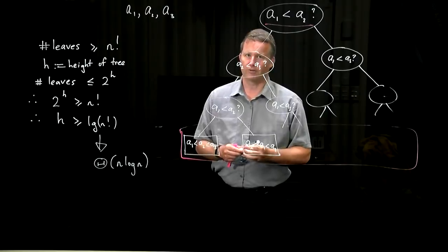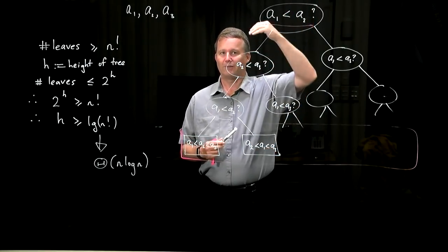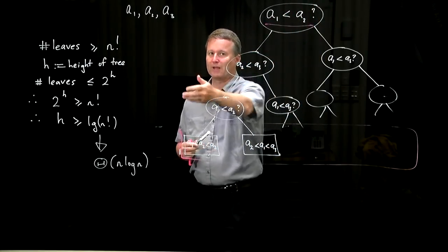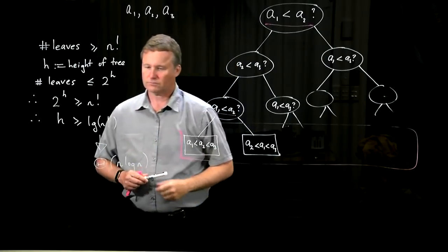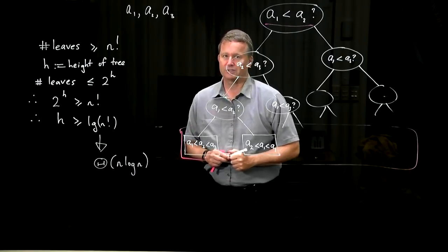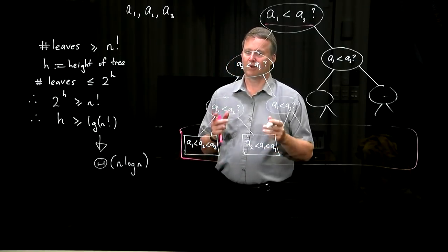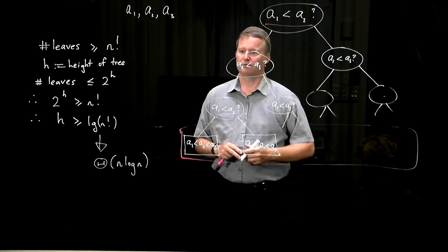For any algorithm, there's a sequence of inputs getting bigger and bigger which make it do that amount of work. So it is not possible for a comparison-based sorting algorithm to run in order n time, for example.